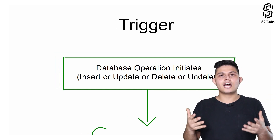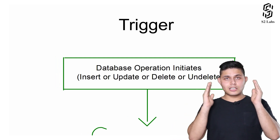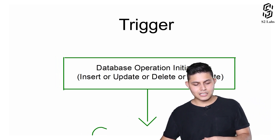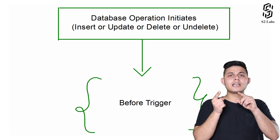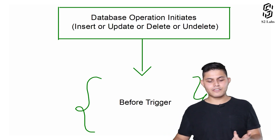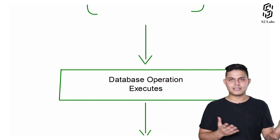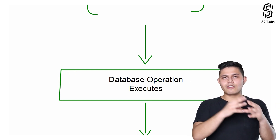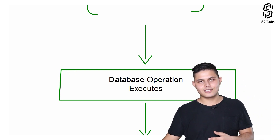Whenever a database operation gets initiated, the triggers created on that particular object will get executed. The first thing that happens as soon as the database operation initiates is the execution of the before trigger — because the before trigger executes before the database operation happens. After the before trigger executes successfully, the database operation gets executed, meaning the record gets inserted into the database if record insertion is what initiated the trigger.